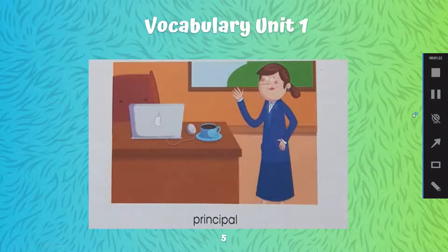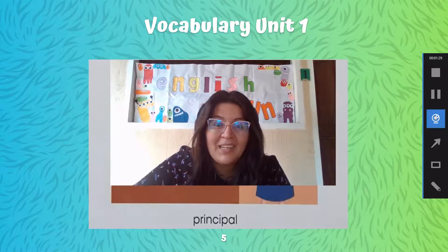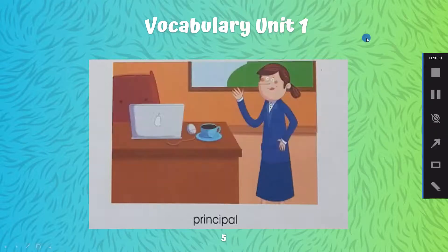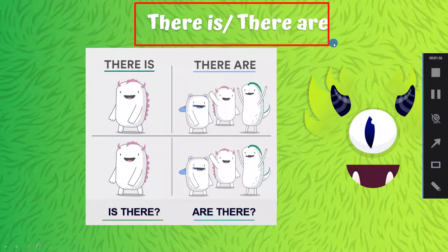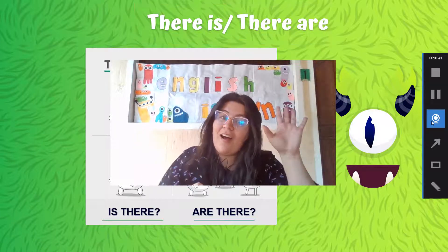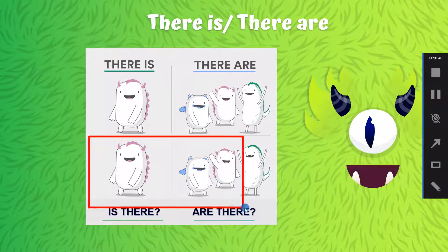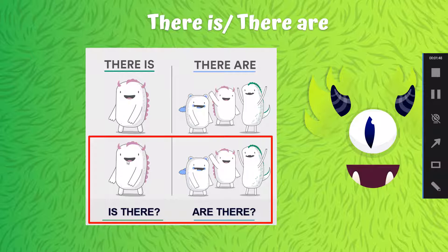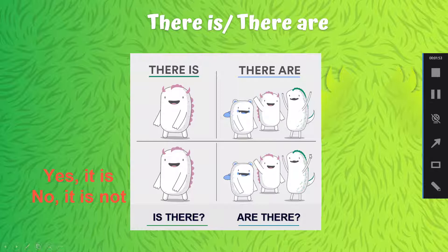También vimos the principal y les preguntaba yo, what's your principal's name? ¿Cómo se llama tu principal? It's Miss Vicky, right? También vimos la diferencia entre there is and there are. There is for singulars. There are for plurals. Y las preguntas: Is there? Are there? Y sus respuestas: Yes, there is. No, there is not. Yes, there are. No, they are not.